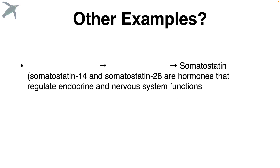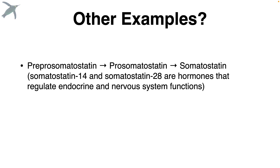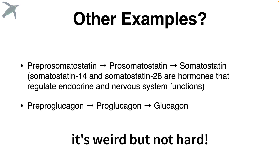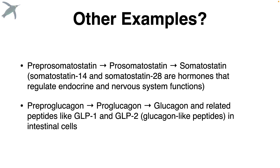Let's try some other examples. Somatostatin — what would we start with? Pre-pro somatostatin. And then? Pro somatostatin. How about glucagon? Pre-pro glucagon. And then pro glucagon. It's a bit weird, but not hard. By the way, from pro glucagon we can make things like GLP-1 and GLP-2. You've probably seen these in the news lately with drugs like Ozempic.